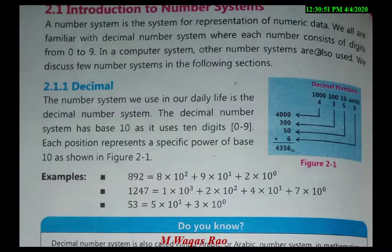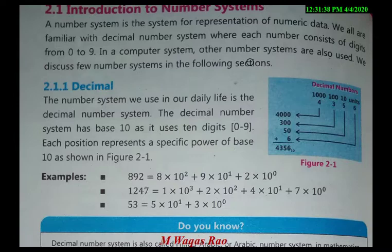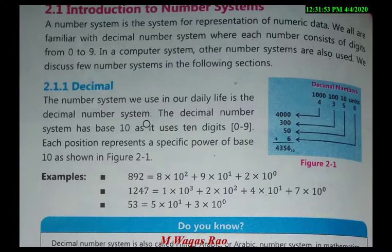We are all familiar with the decimal number system, where each number consists of digits from 0 to 9, which we use in our daily routine. In our computer systems, other number systems are also used. The number system we use in our daily life is the decimal number system.